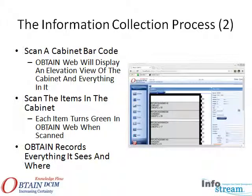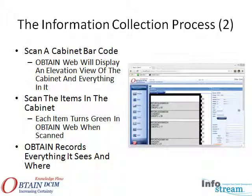When a cabinet label is scanned, the Obtain mobile device will display an elevation view of the cabinet with all the devices Obtain knows about. As each device is scanned, it will turn green in the Obtain web display. Once the user scans all the devices in a cabinet, they simply move to the next cabinet and scan the cabinet label. Obtain displays that cabinet and the user again scans all the devices. The collection process proceeds in a fraction of the time it would take to manually collect text information.